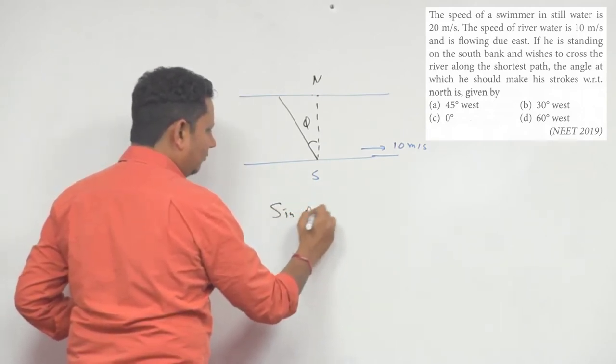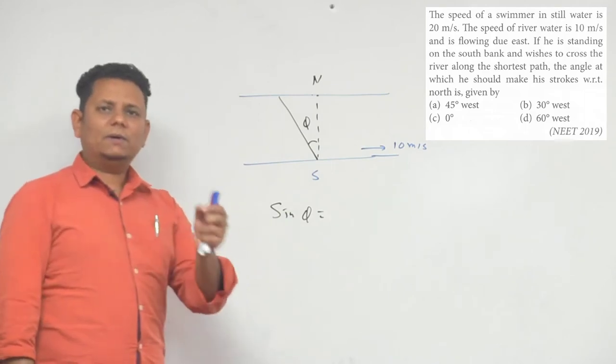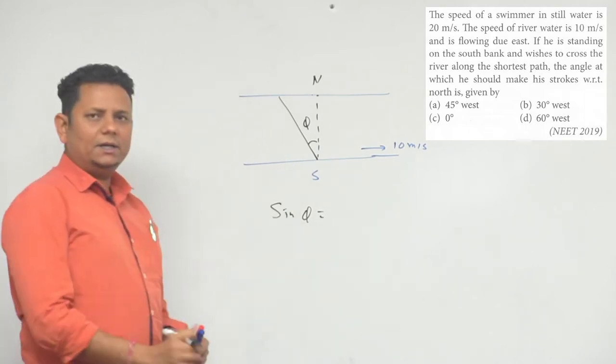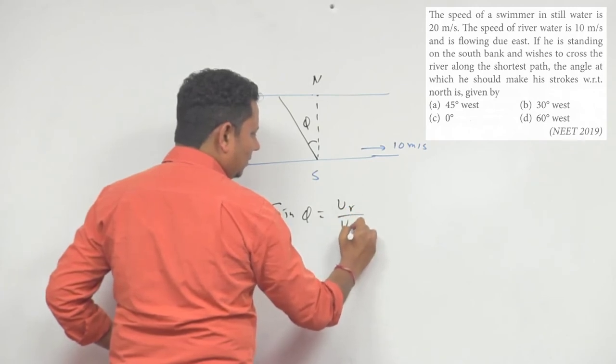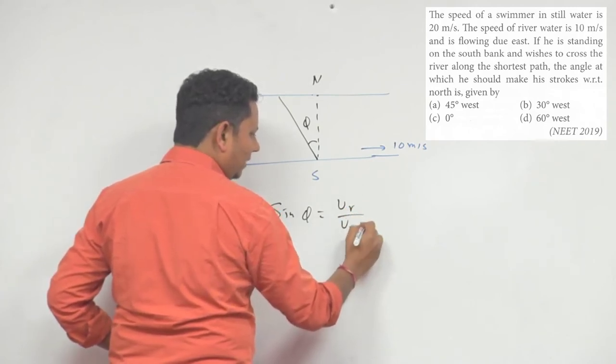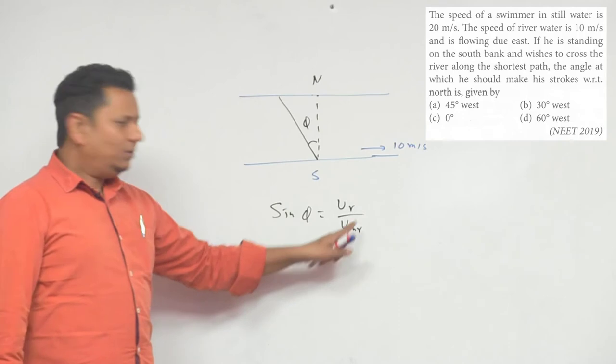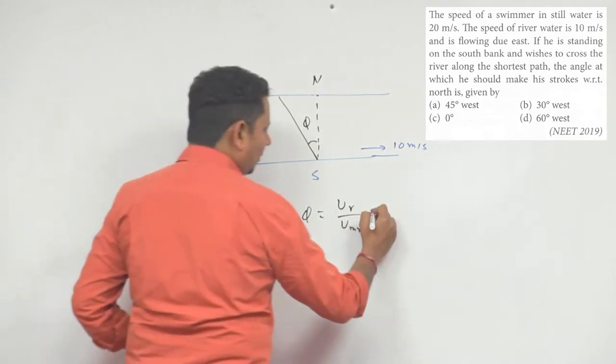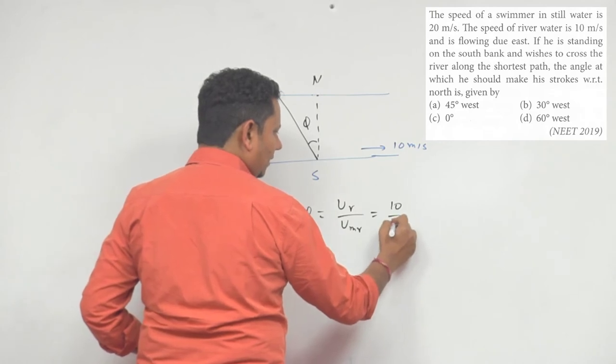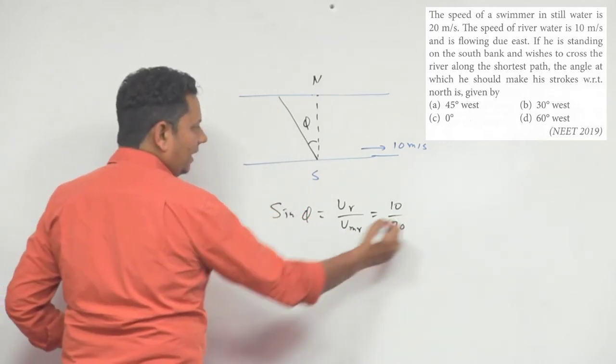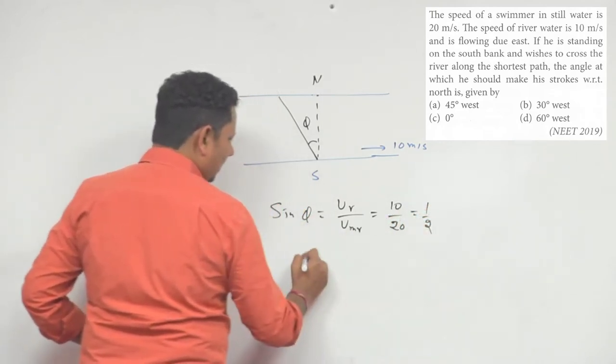That sin theta or sin phi, we call it the smaller one by the larger one. The smaller speed divided by the larger speed, which is velocity of river divided by velocity of man with respect to river. This is how we can calculate. So its value is 10 divided by 20, which makes sin phi equal to 1 by 2, which tells us phi will be equal to 30 degrees.